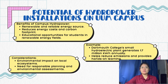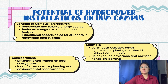Next, hydropower installations on campus offer renewable and reliable energy, reducing cost and carbon footprint. They also provide educational opportunities. For example, Danforth College's hydroelectric plant generates 1.7 million kilowatt-hours annually, helping reduce emissions and providing hands-on learning. It is crucial to conduct environmental assessments to minimize impact on local ecosystems.